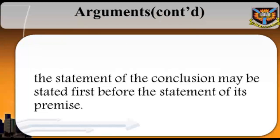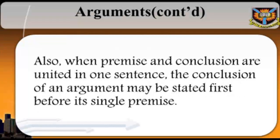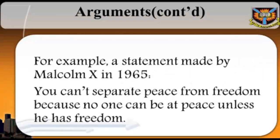A second example: 'Corrupt politicians should be banned from holding public offices. After all, statistics has shown that corrupt politicians who hold public offices are responsible for economic problems.' It is also the case that even when premise and conclusion are united in one sentence, the conclusion of an argument may be stated first before its single premise. For example, a statement made by Malcolm X in 1965: 'You can't separate peace from freedom, because no one can be at peace unless he has freedom.'